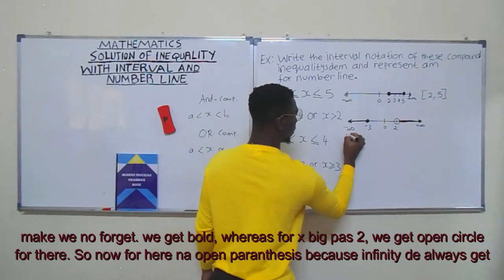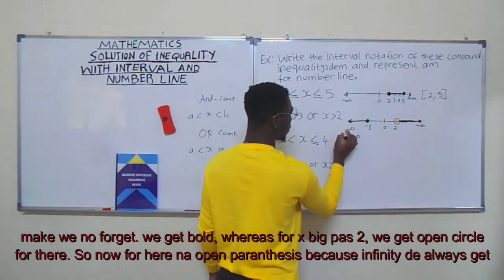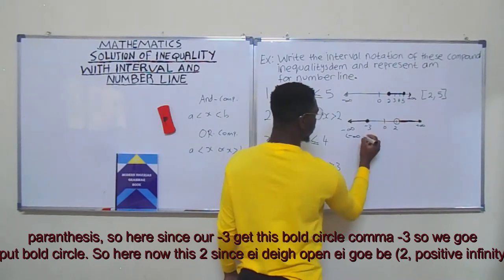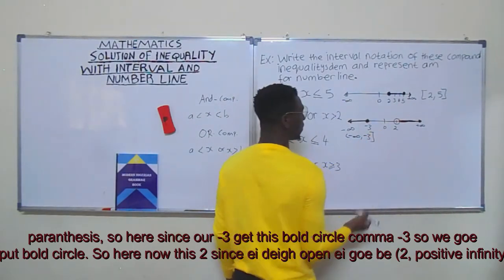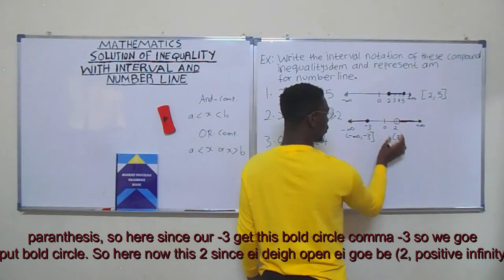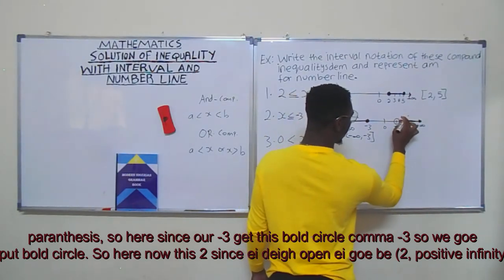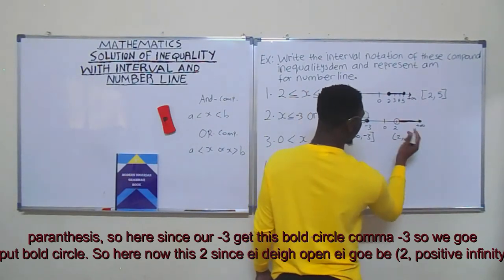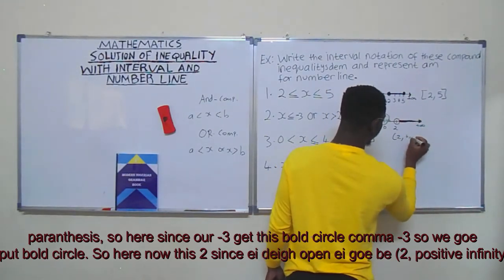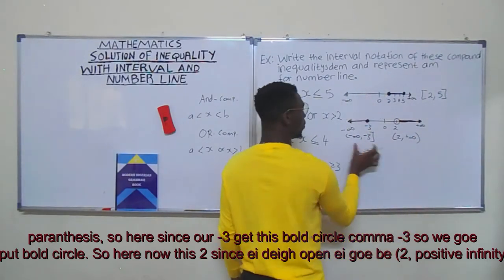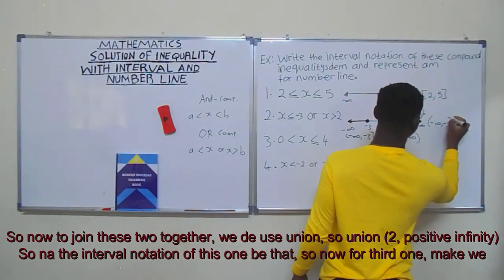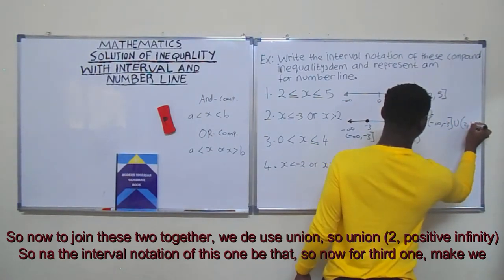For infinity, we always use open parentheses. Since minus three has a closed circle, we put a bracket: so the first part is (-∞, -3]. Since two has an open circle, we use an open parenthesis: (2, +∞). To join these two together we use union, so the interval notation is (-∞, -3] ∪ (2, +∞).